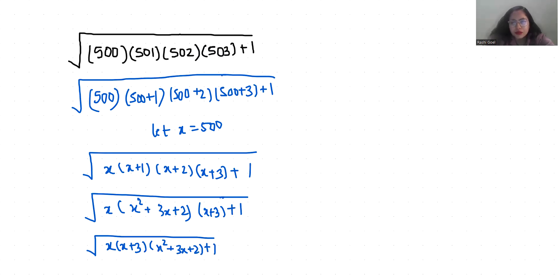So it becomes x squared plus 3x times x squared plus 3x plus this 2 I can write it as 1 plus 1, plus 1.